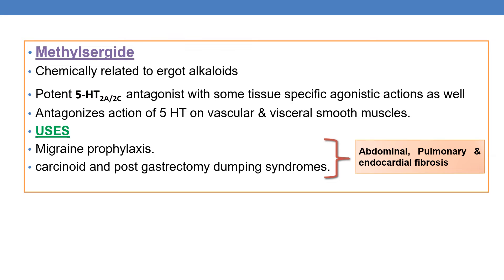Previously it was used to treat migraine prophylactically and for the treatment of carcinoid and post-gastrectomy dumping syndrome. But it is now disused because it causes pulmonary, abdominal, and endocardial fibrosis. Due to these serious side effects, methysergide is no longer used.